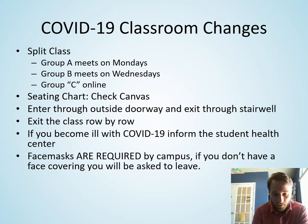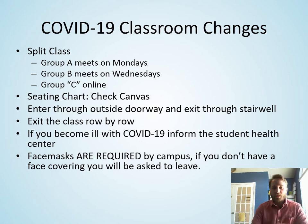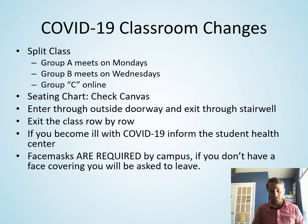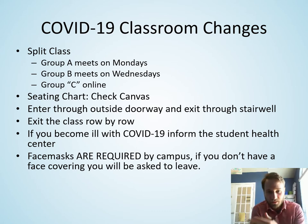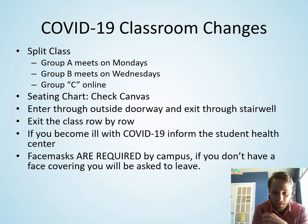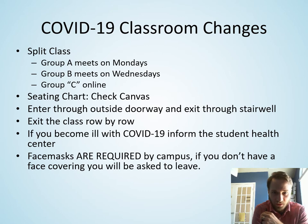When you enter Chemistry 100, enter through the outside doors on the first floor — that's the left door when you're facing the chairs from the chalkboard. When you exit, use the right door by the stairwell and elevators, and we'll exit row by row so people don't bunch up at the exit.